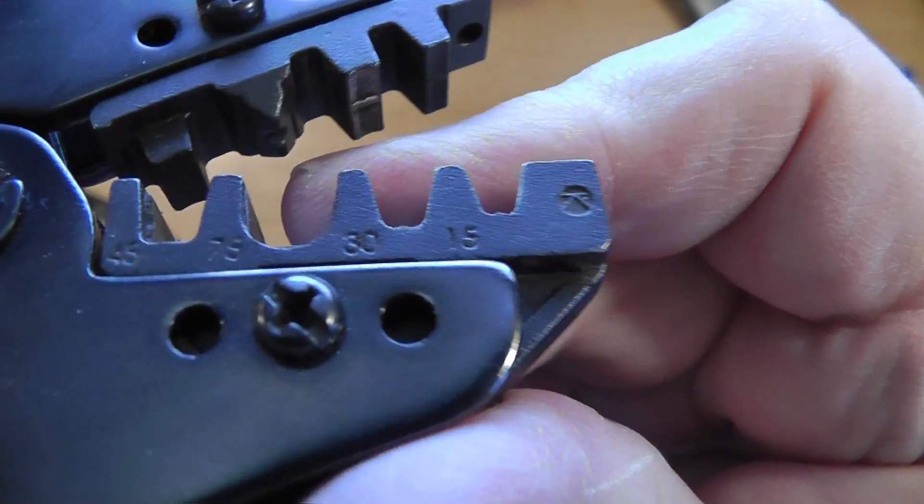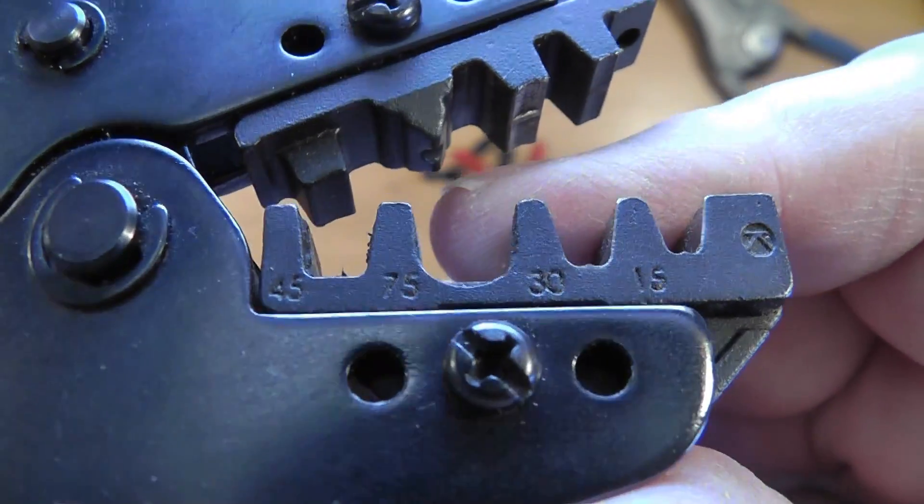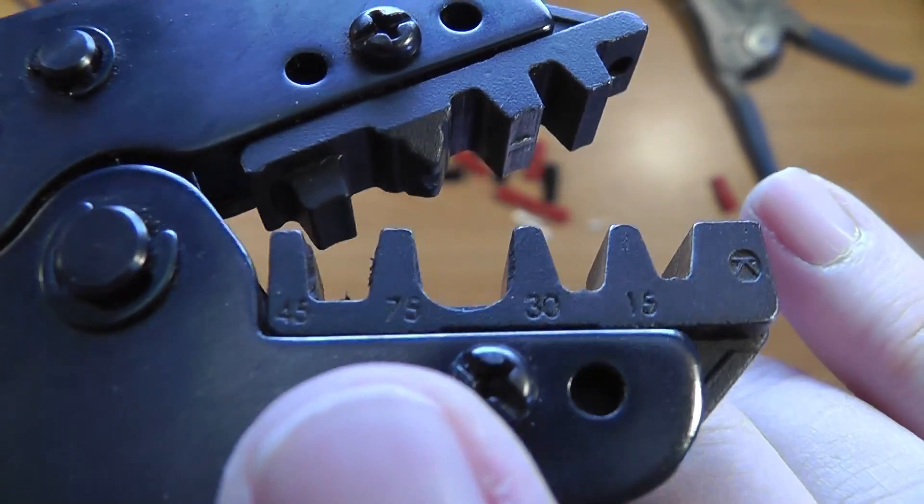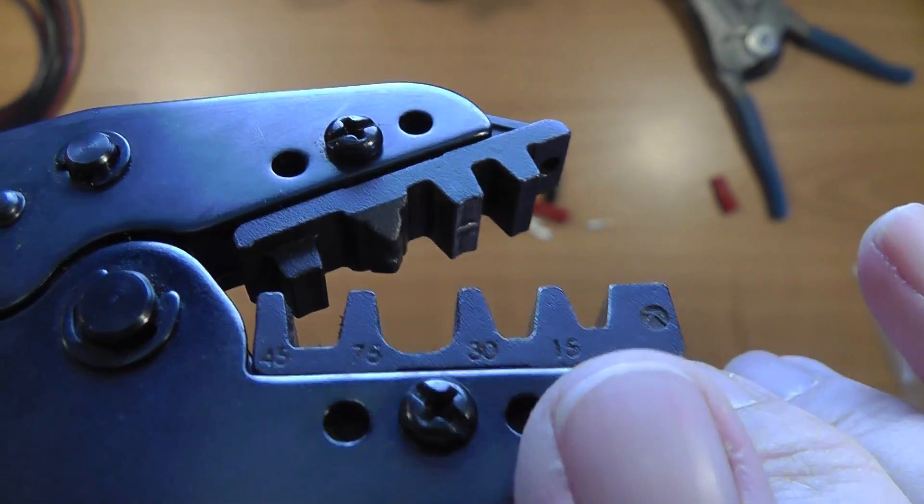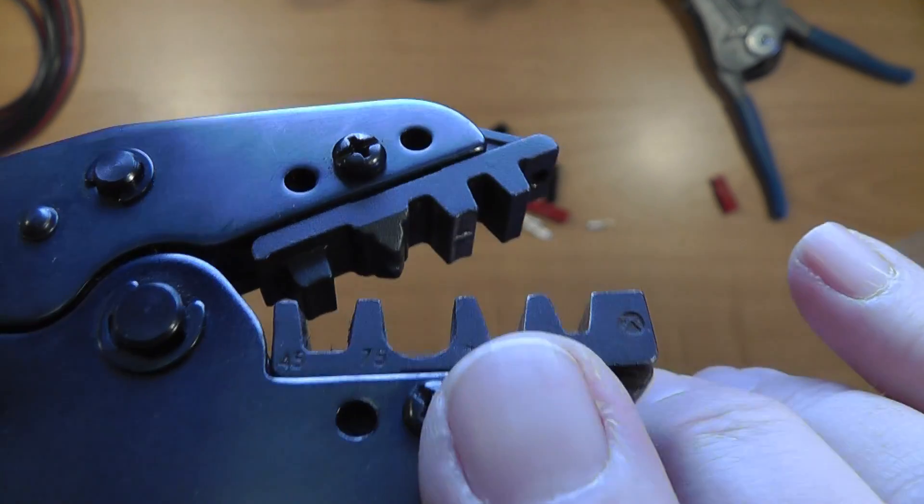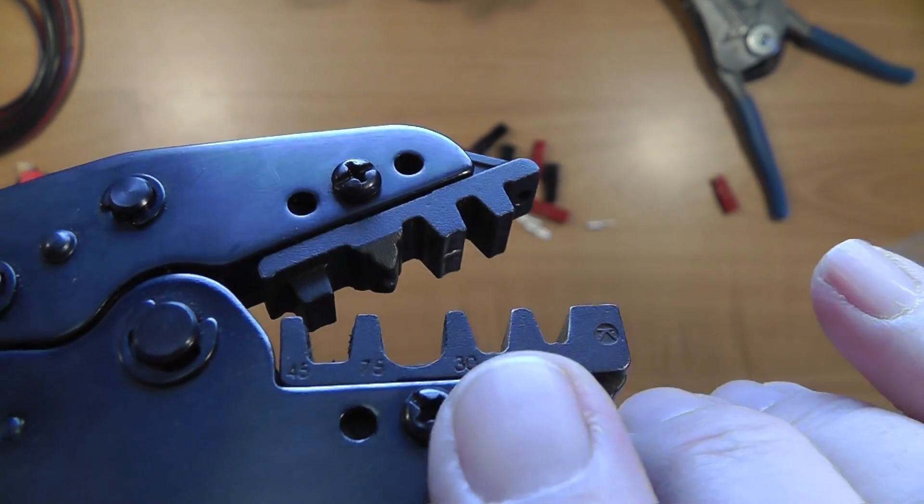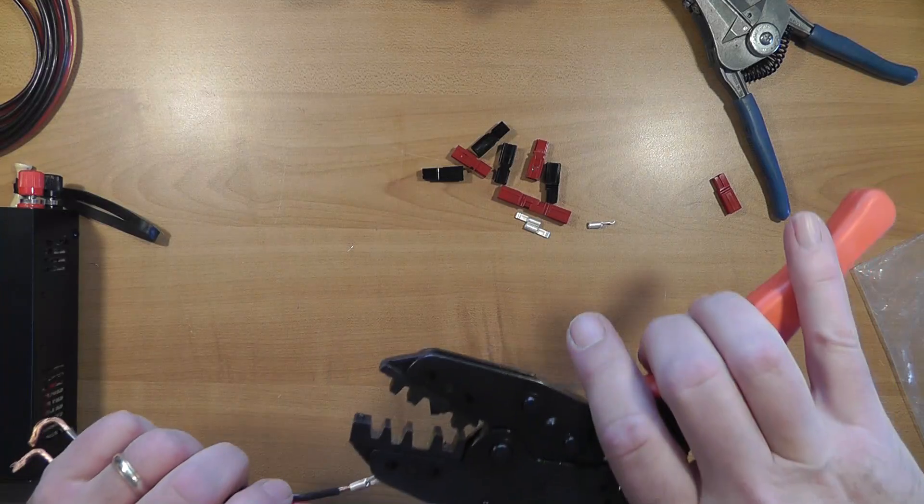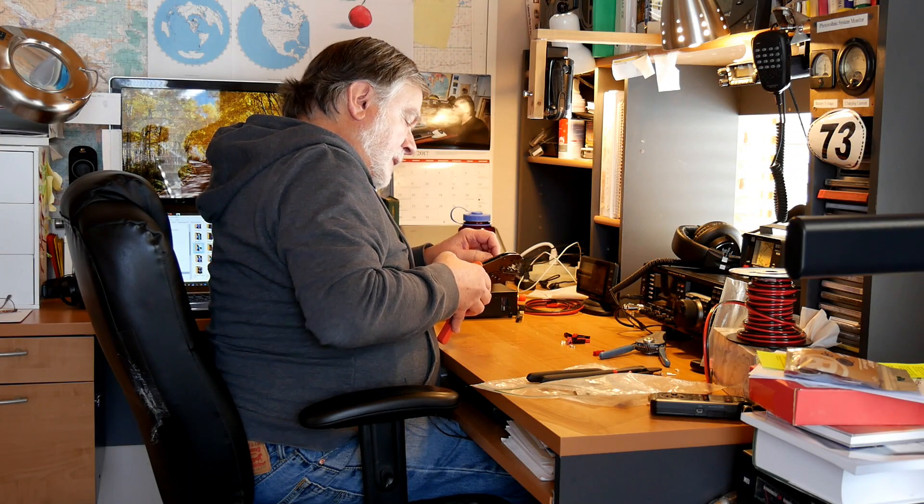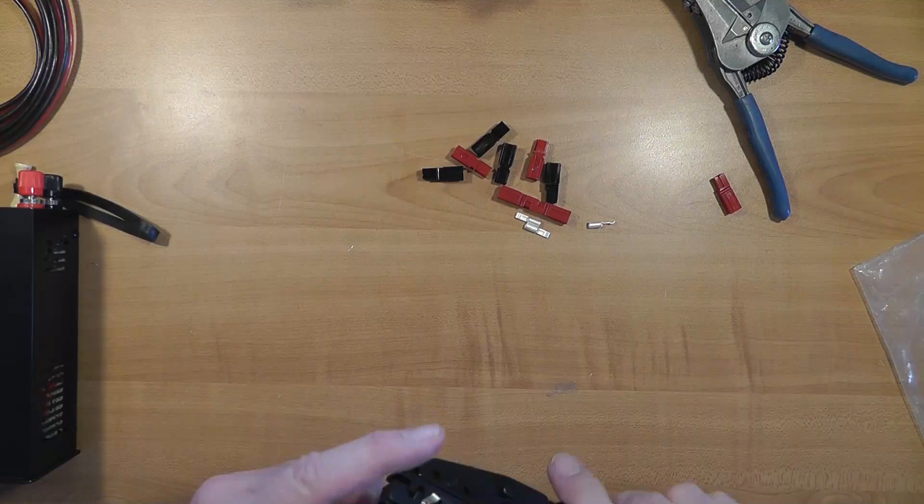On the crimping tool, we have this right here. Let's see if we can get this so you can see it. There we go. I see the 45, the 70, is that 70 there? 75, 30, and 15. So, it's not the one above it. It's the hole in the middle. So, this is for 15 and this is for 30. So, we're doing the 30 amperes. So, I'm going to pick this up, and I'm going to put this into that 30 amp slot right there.